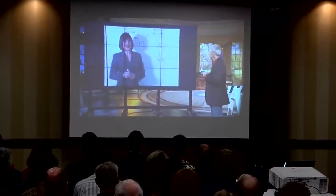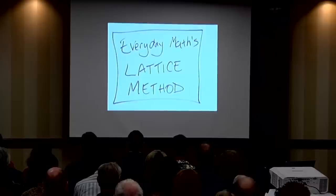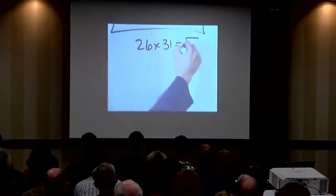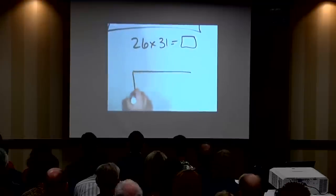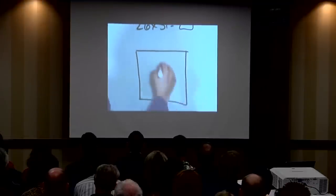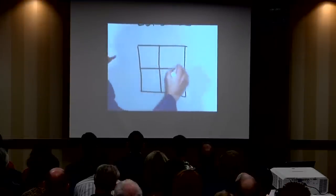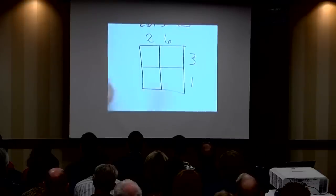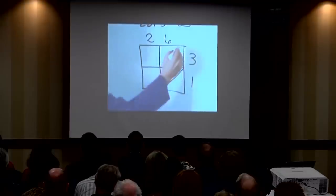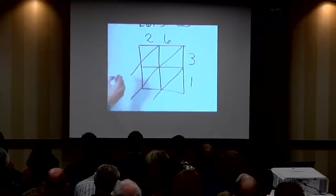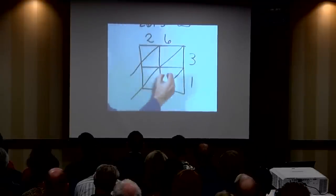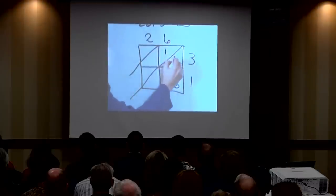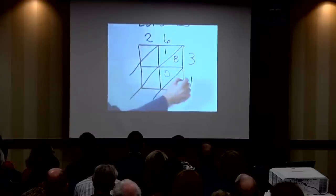Another popular algorithm taught in everyday math is the lattice method. Same problem: 26 times 31. This time we have to set up a lattice. We put the 26 on top and the 31 along the side, then draw these diagonals. Then we do 1 times 6 and fill it in — 06. 3 times 6? 18. 1 times 2?